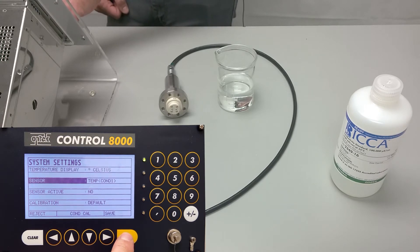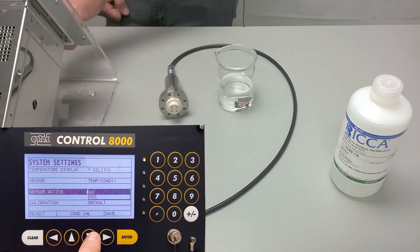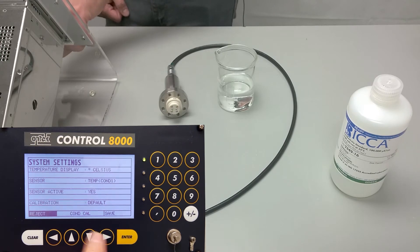We also want to ensure that COND1, which is the sensor we are calibrating, is the one that we have selected, and then scroll down to sensor active and change this to yes. Scroll down and press save.